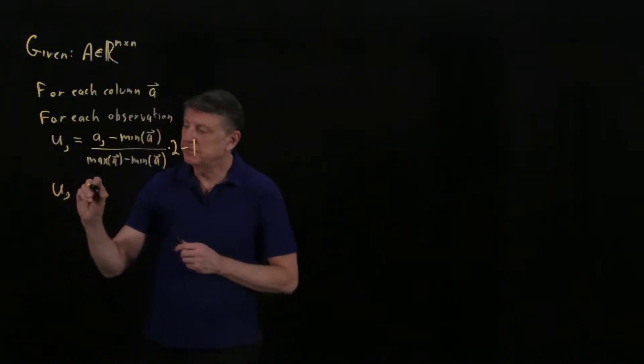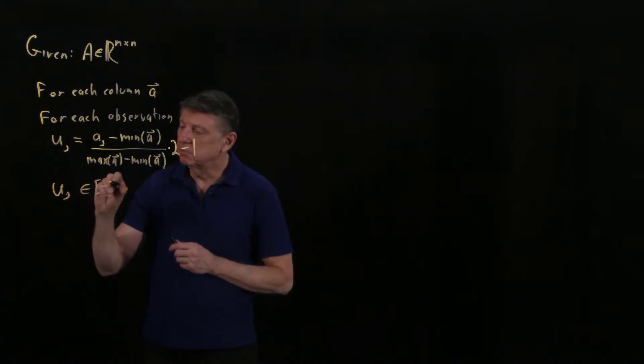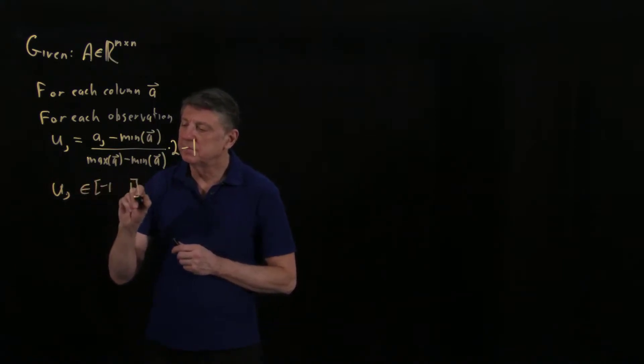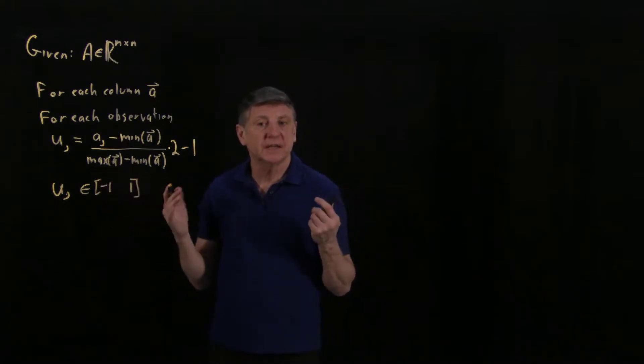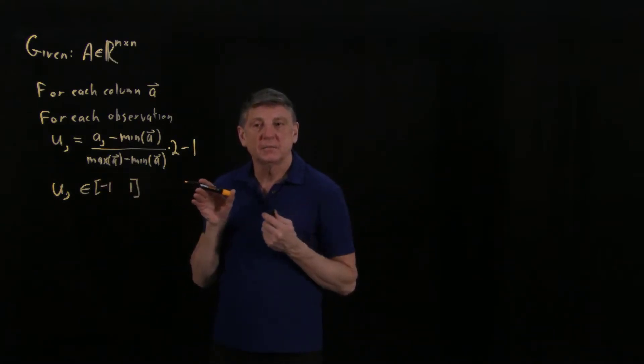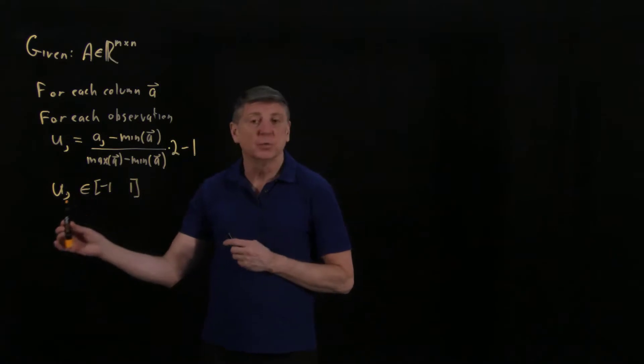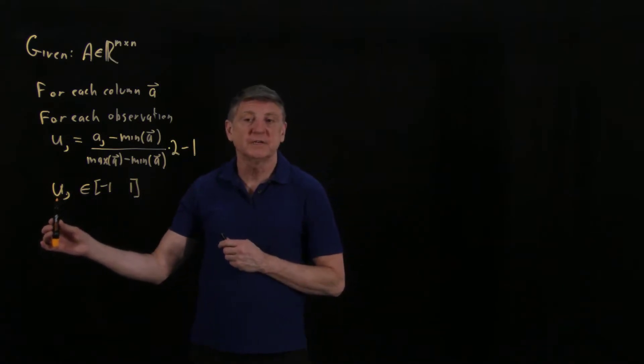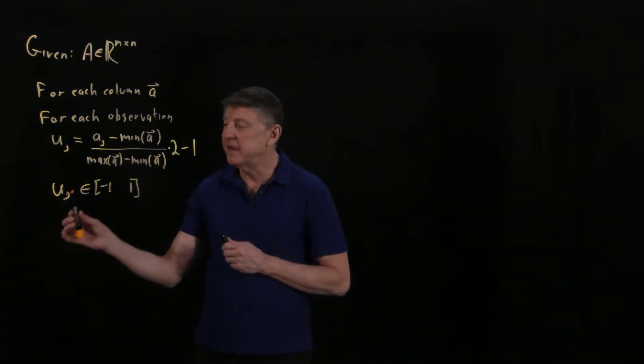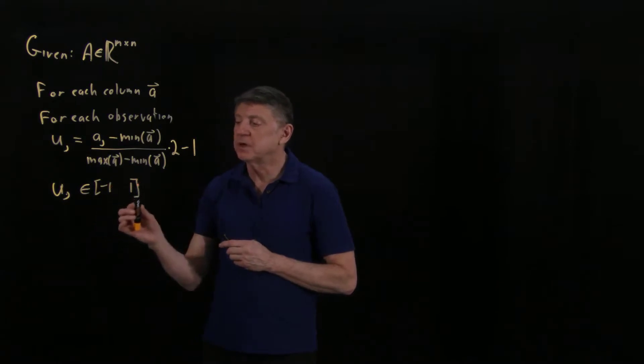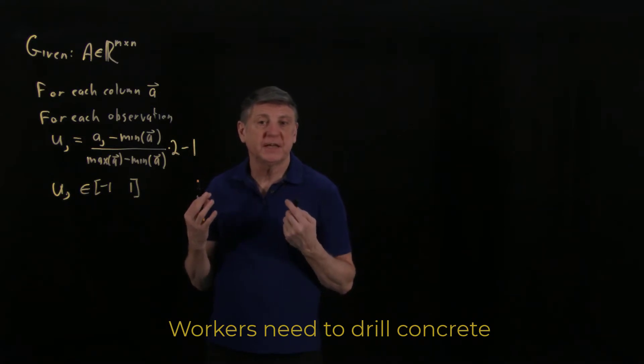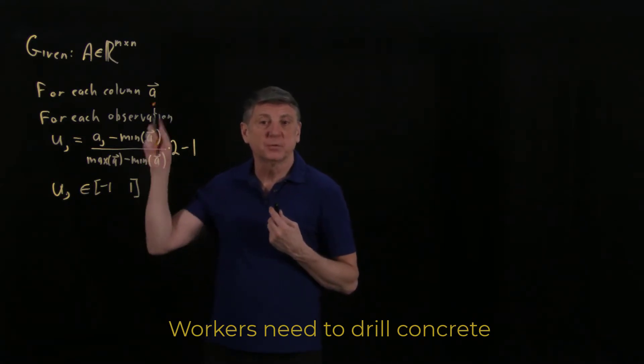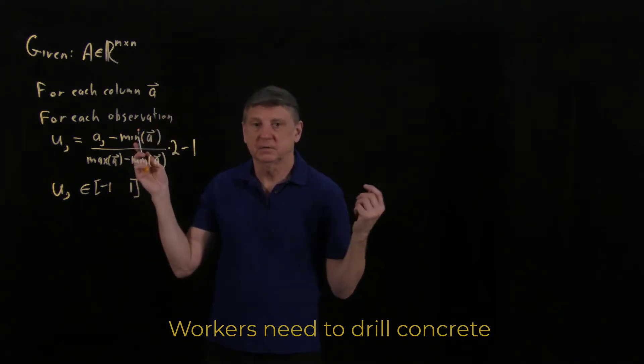Now, uj will be between minus one and one. And so we can use this rescaling to find a variant. So what we'll do is we'll think of this as a variant. So u sub j is now between minus one and one. And this will allow us to explore uniformly distributed data in a hypercube. Because if we perform this for, oh no, there we go.